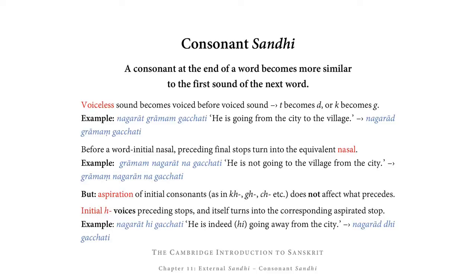Before a word-initial nasal, preceding final stops turn into the equivalent nasal. For example, in 'grāmaṃ Nagarān na gacchati' — 'he is not going from the city to the village' — Nagarāt stands in front of na. Na begins with a nasal, and therefore the T at the end of Nagarāt also turns into a nasal. T is a dental stop, and therefore it turns into the dental nasal N, giving us Nagarān.